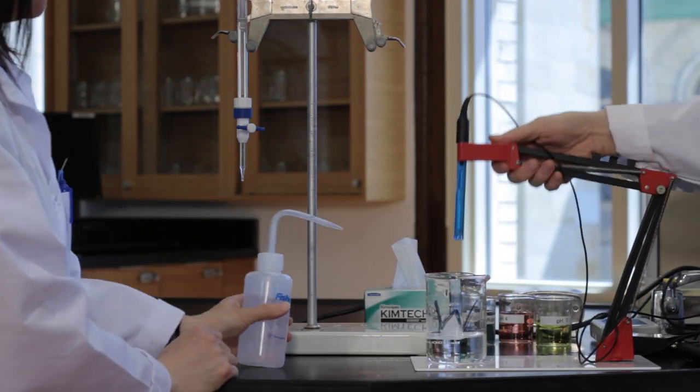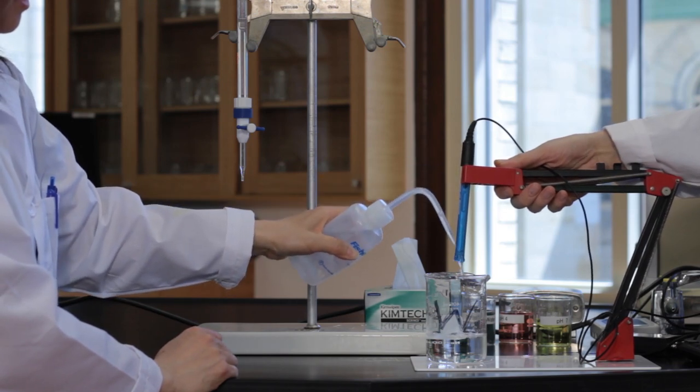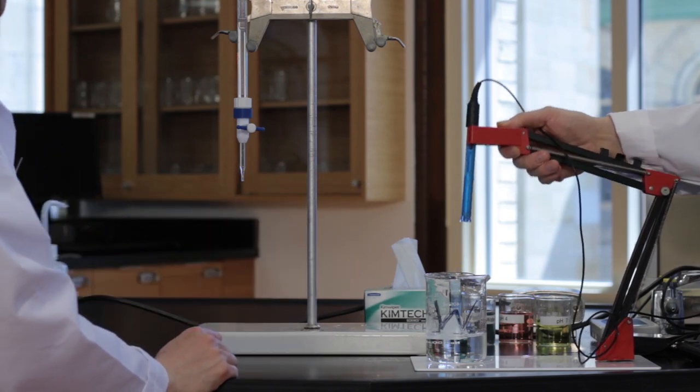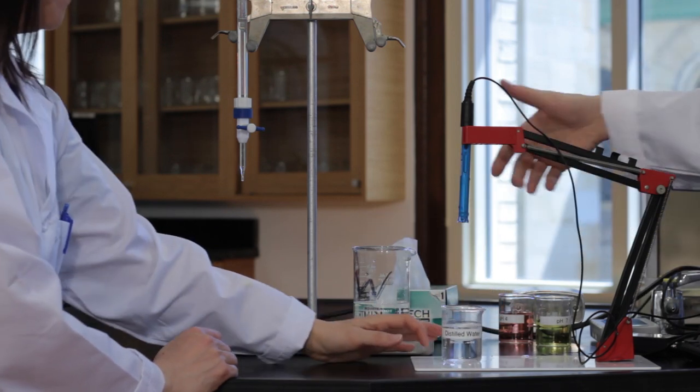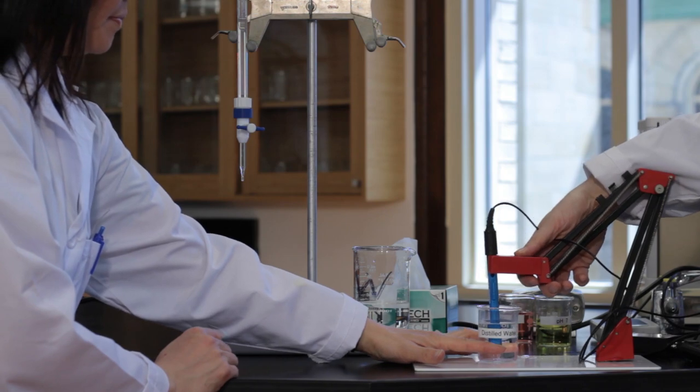Rinse off the pH sensor with distilled water and immerse its tip in the water solution. Repeat the titration by replacing hydrochloric acid with an unknown weak acid. Clean the glassware and put away the equipment.